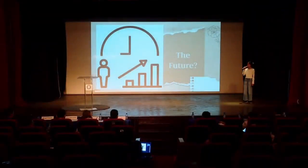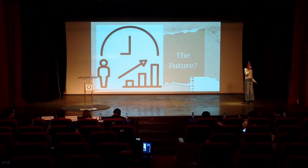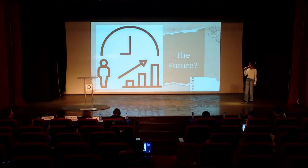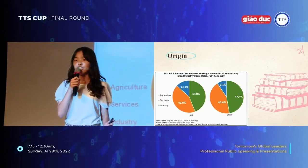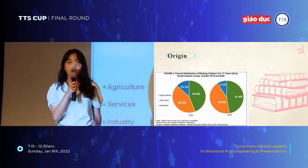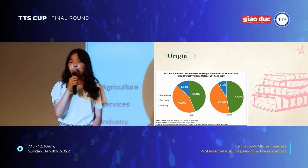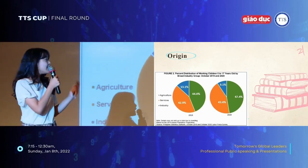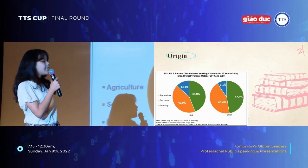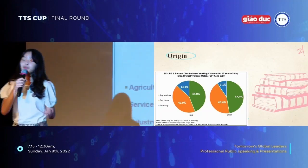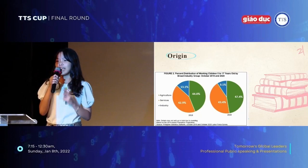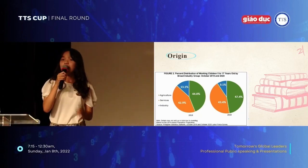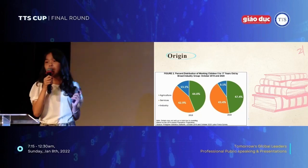To illustrate the percent distribution of working children from 5 to 17 years old by broad industry groups: there are three broad industry groups — agriculture, services, and industry — illustrated by three different colors.